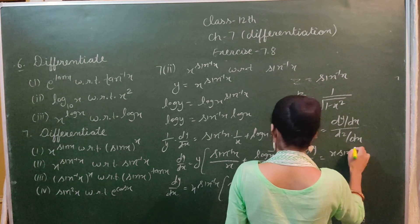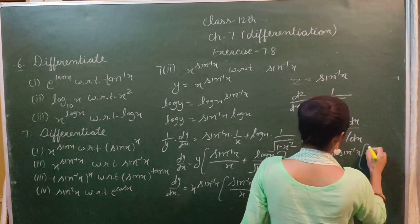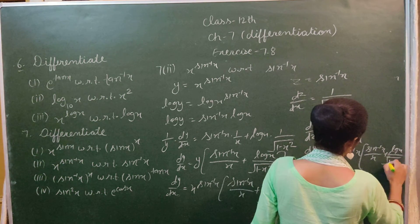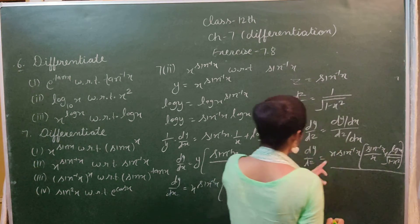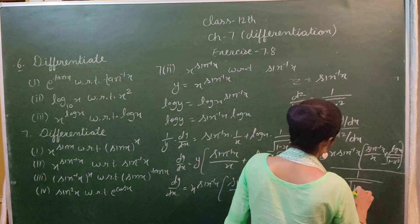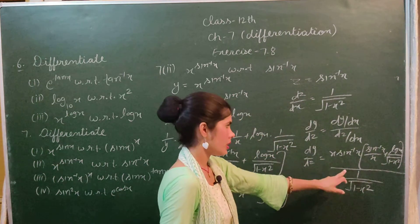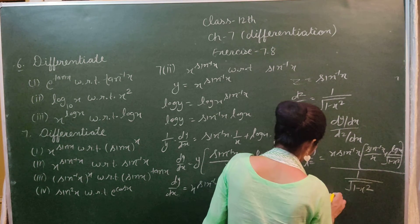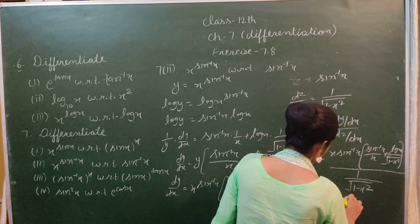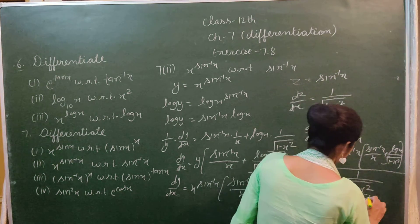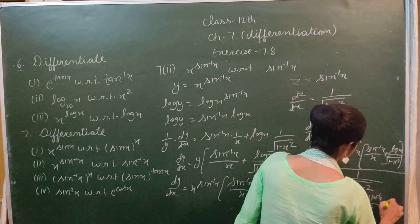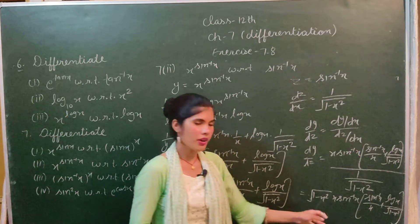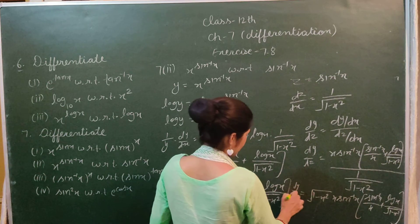So dy/dz = x^(sin⁻¹x) times (sin⁻¹x / x + log x / √(1 - x²)) divided by 1/√(1 - x²). This gives the final answer: x^(sin⁻¹x) times √(1 - x²) times (sin⁻¹x / x + log x / √(1 - x²)).